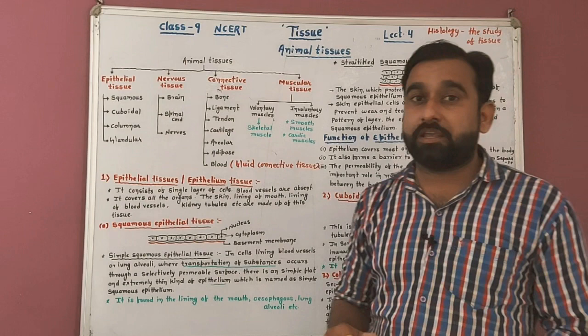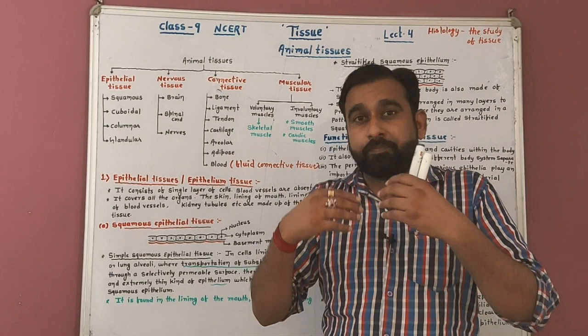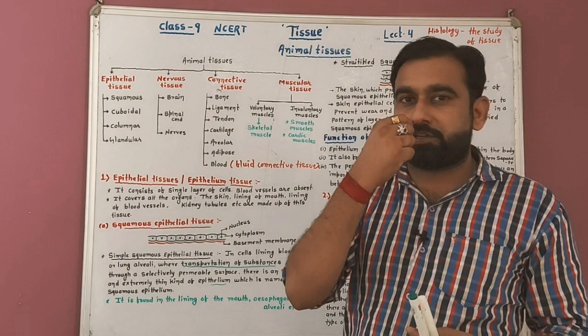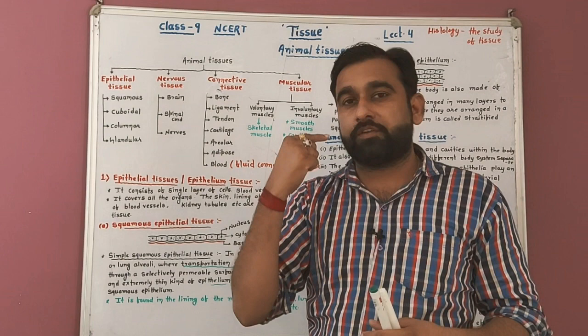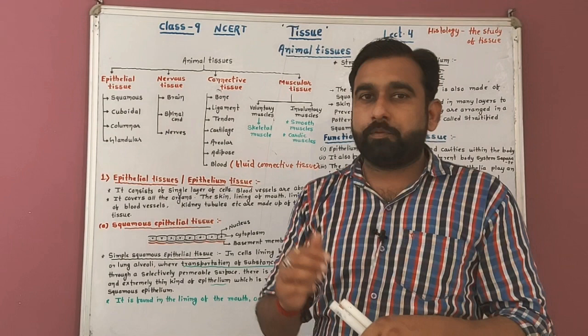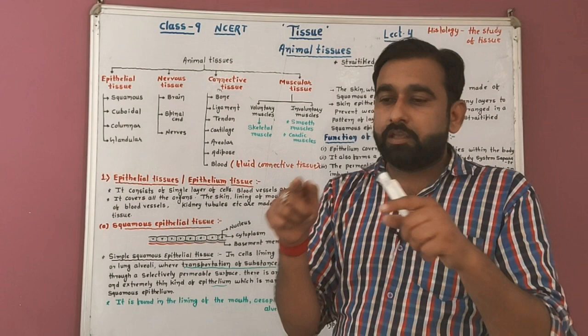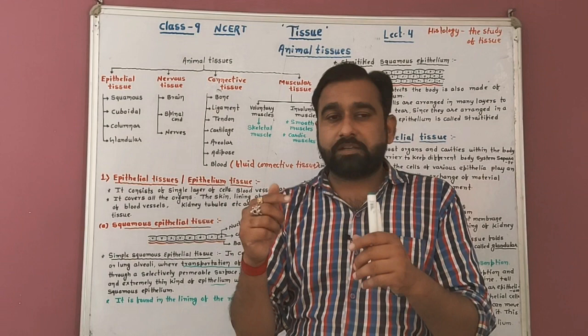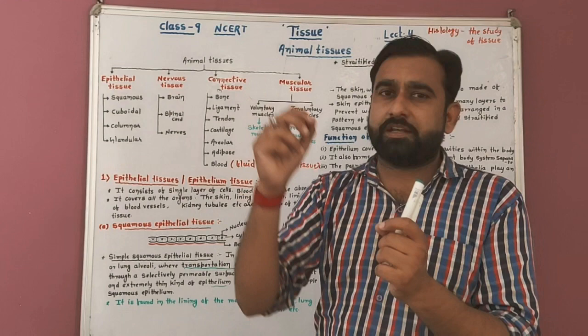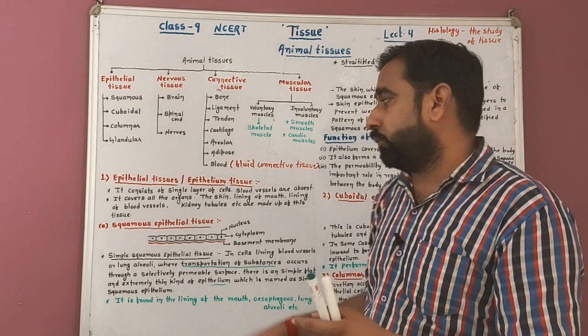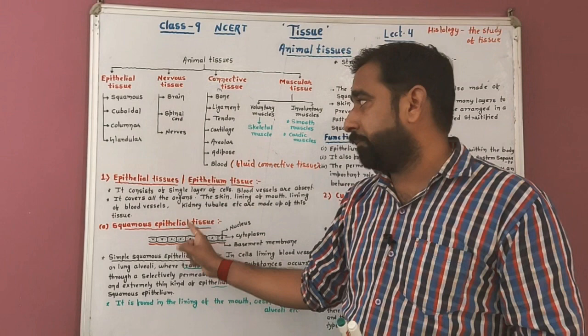When we inhale oxygen, it travels from the nostrils to the nasal cavity, then to the nasopharynx, then the pharynx. The pharynx divides into two branches — the windpipe (trachea) and the food pipe (esophagus). The trachea opens into the lungs (left and right). Inside the lungs, trachea leads to bronchi (primary, secondary, tertiary), then bronchioles, and finally the alveoli. The lining of the alveoli is made up of simple squamous epithelial tissue.